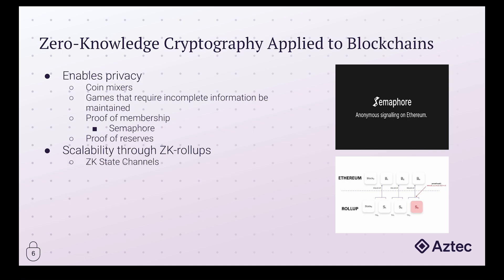Moving on to proof of membership — a notable example of this is Semaphore. What Semaphore allows you to do is signal, that is send a message, on behalf of a group without revealing who you are in that group. For example, say this group comprises a list of public Ethereum addresses, and you prove that you're a member of this group by supplying your private key as a private input. That way you're able to prove that your private key corresponds to one of the public keys in the provided list, but no one knows who you actually are when you send the message.